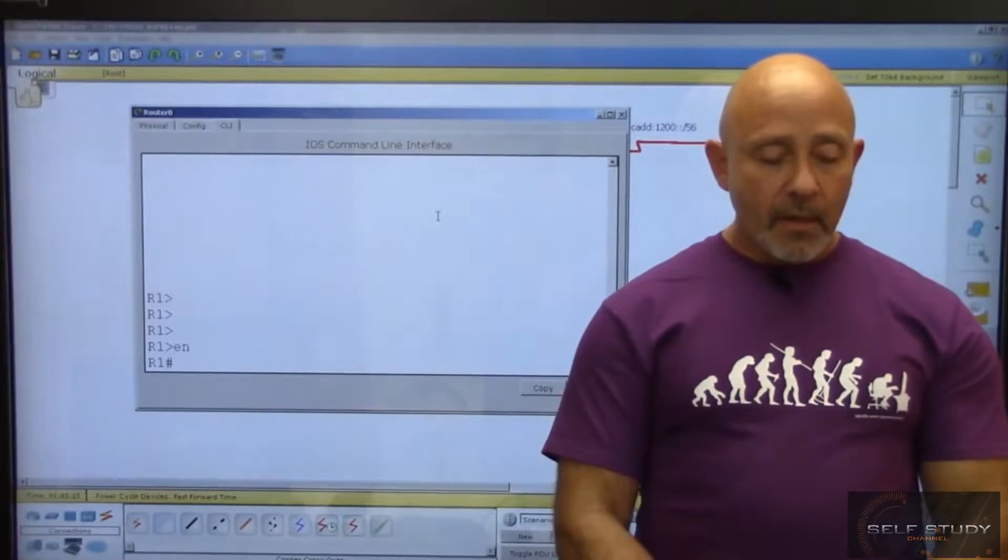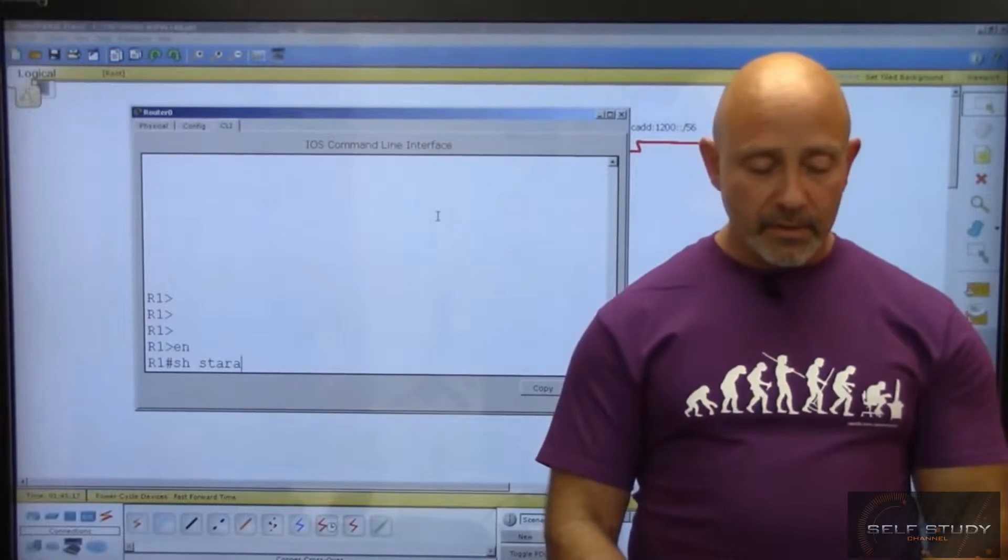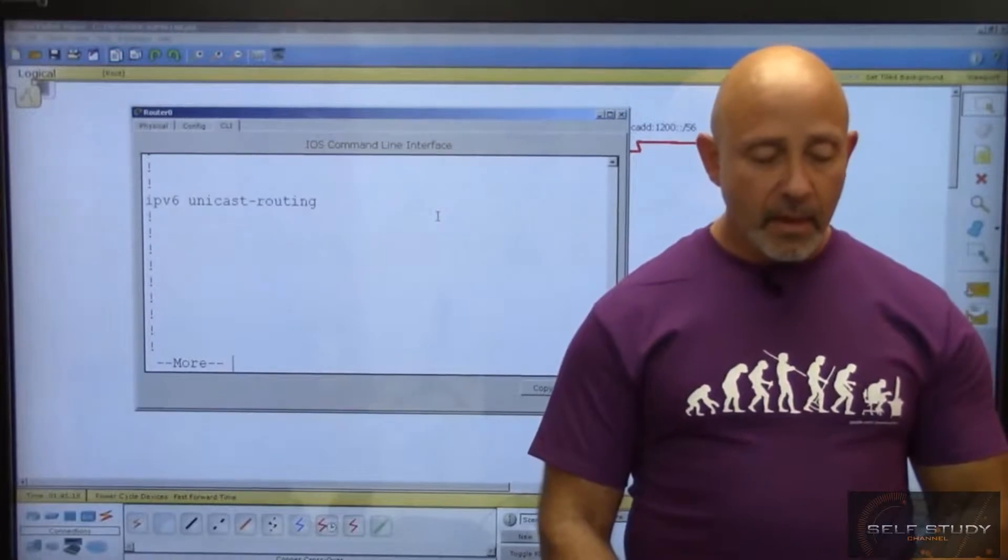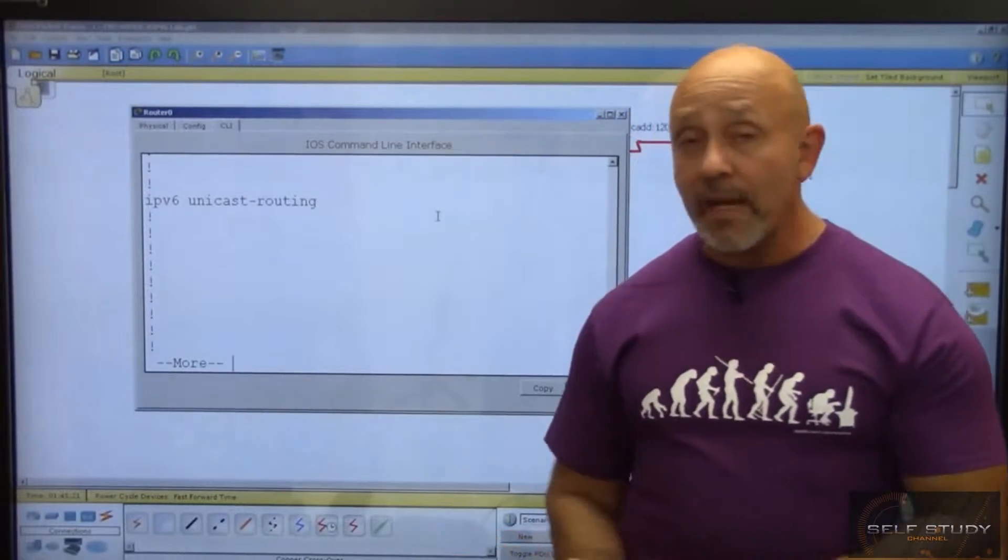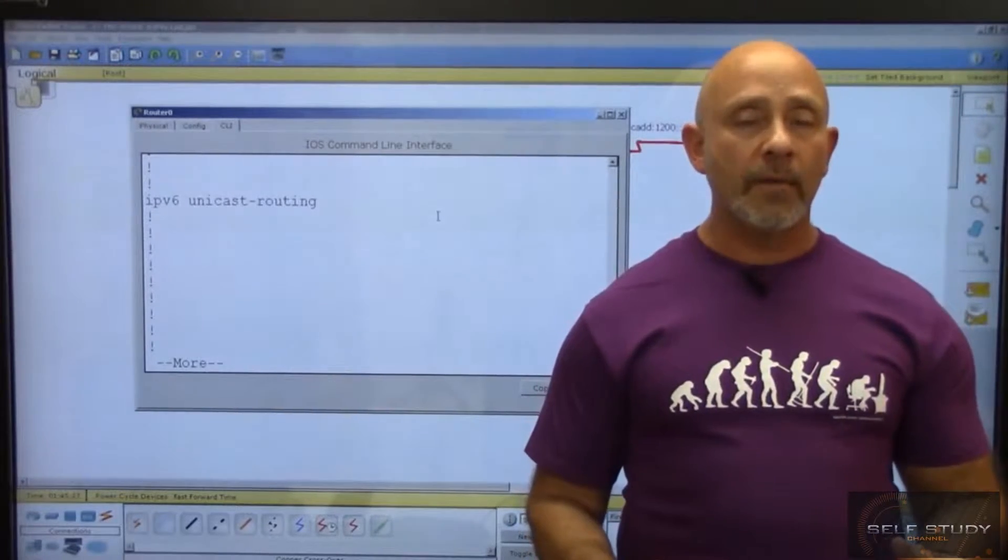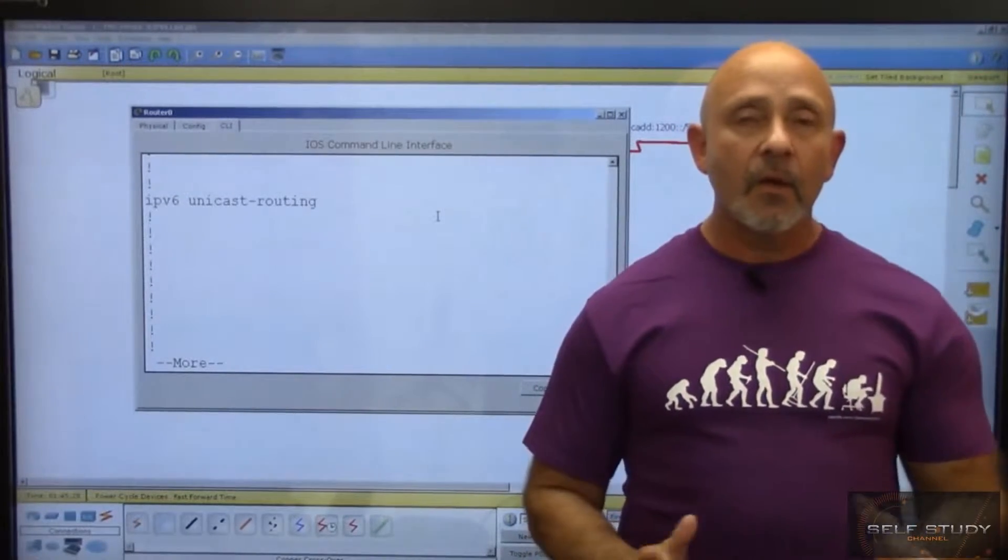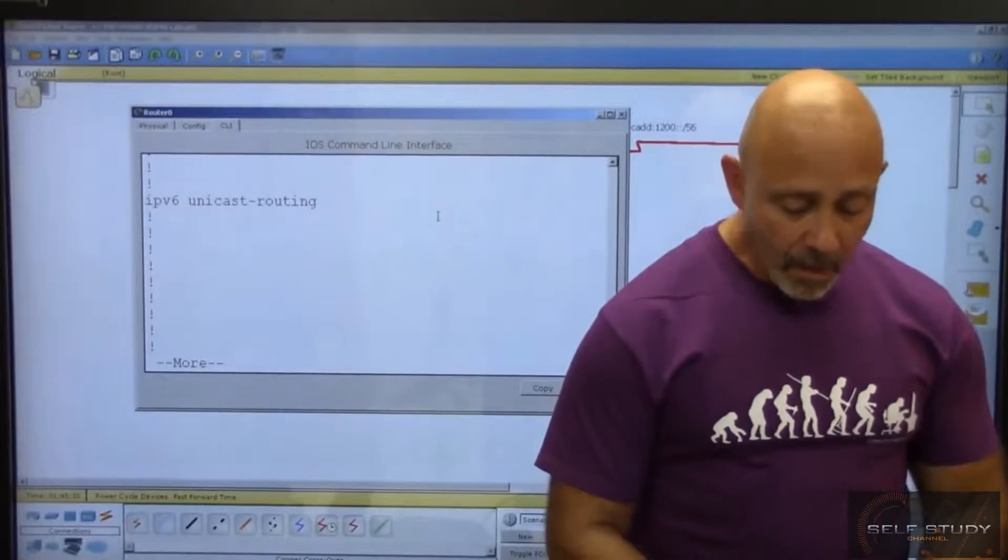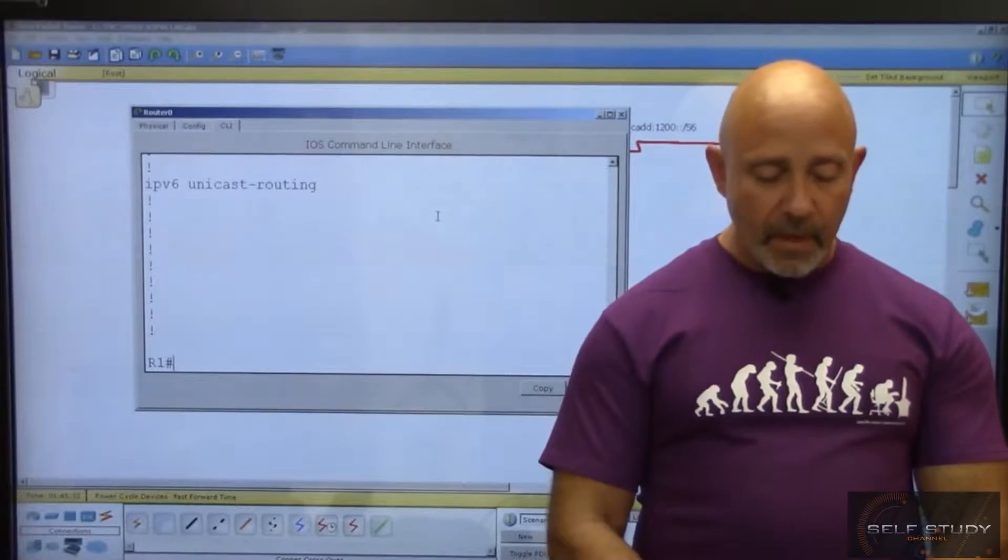You must type IPv6 unicast-routing. That's one command that you must type if you're doing any kind of routing on your routers, whether it be static or dynamic, you must type that. So I'm going to do config T, global configuration.